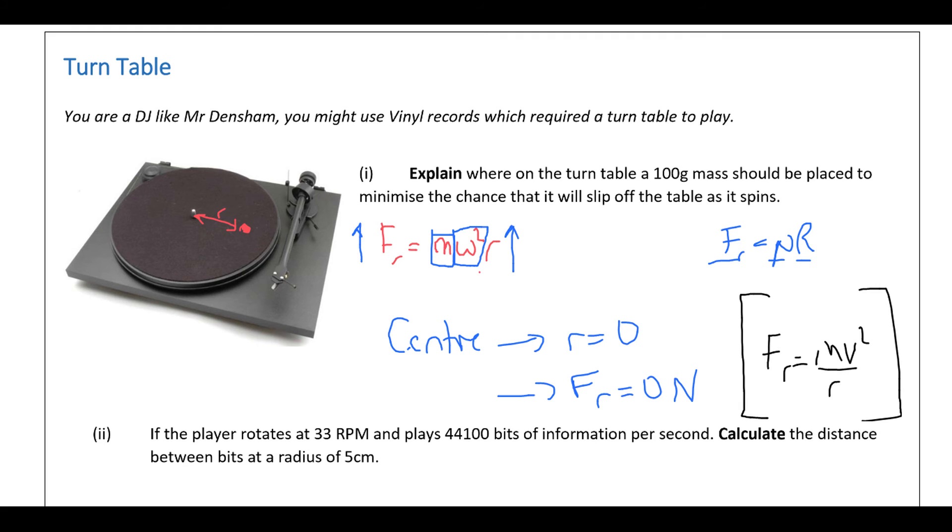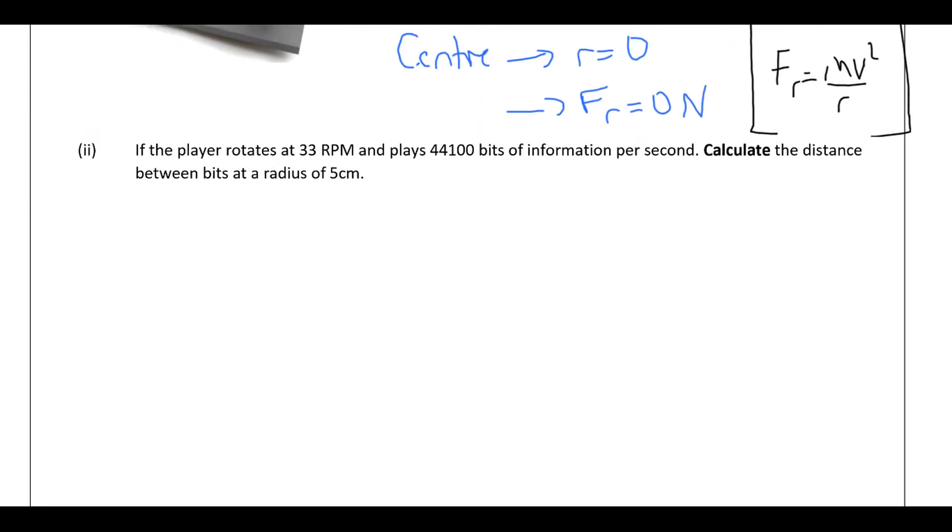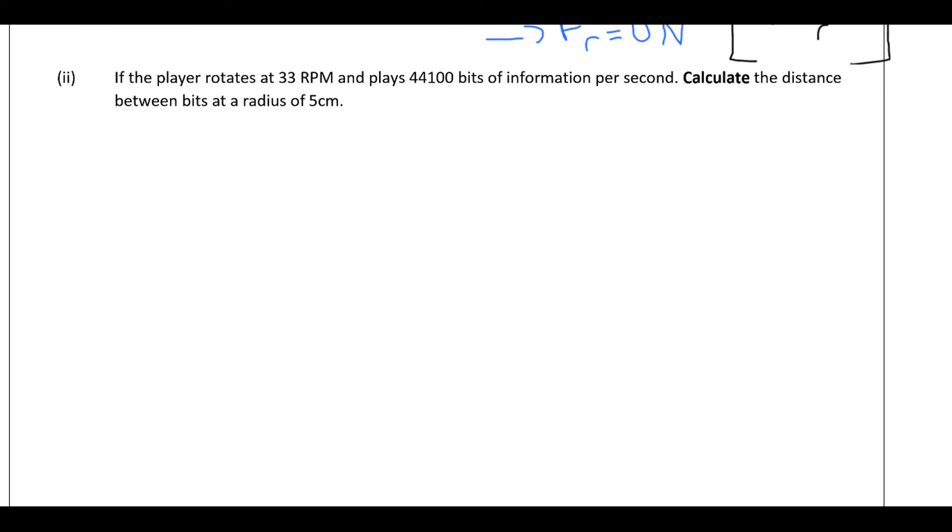Alright, so let's have a look at the final question here. So if the player rotates at 33 revolutions per minute and plays 44,100 bits of information per second, calculate the distance between bits at a radius of 5 cm. Ok, so let's first work out what the angular speed is in radians per second. So 33 revolutions per minute is 33 over 60 revolutions per second times 2π would turn it into radians per second. So let's do that first. 3.455 radians per second is the angular speed of your disk.